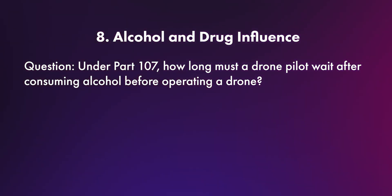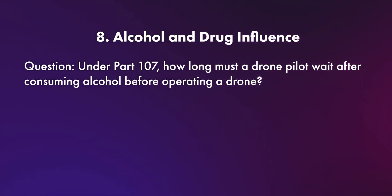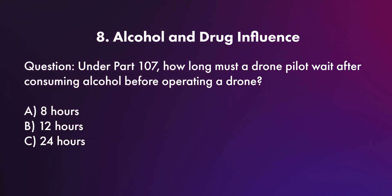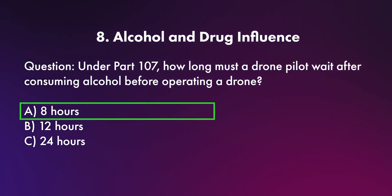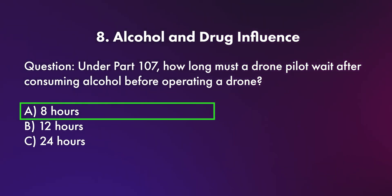Question eight: alcohol and drug influence. Under Part 107, how long must a pilot wait after consuming alcohol before operating a drone — A) 8 hours, B) 12 hours, or C) 24 hours? The correct answer is 8 hours. So if you have a beer at 2 PM, you won't be flying your drone until 10 PM that night.